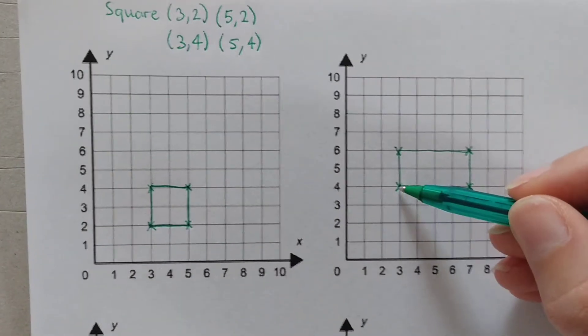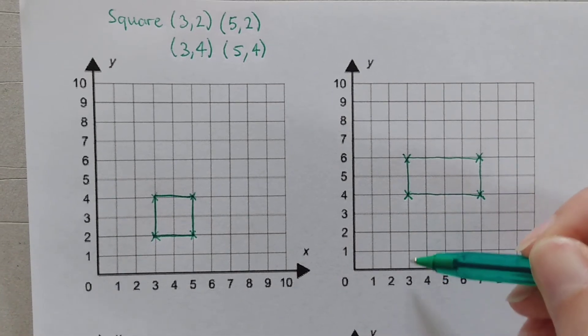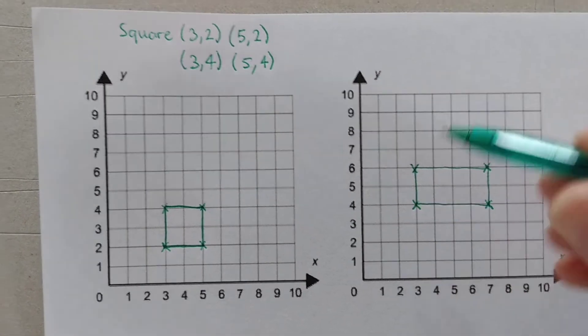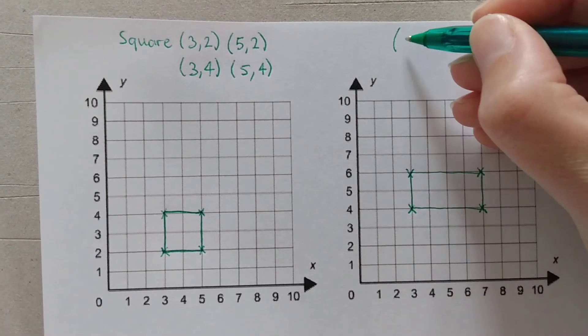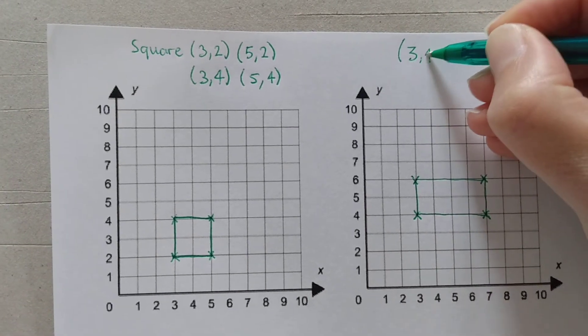Right. Let's plot our points. What's this one, please? Remember we look at the x-axis before the y. OK, so what's the coordinates of this point? Can't hear you? That's better. 3, 4.